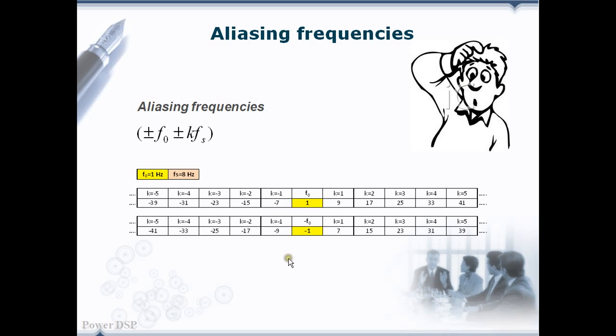However, there are so many frequency components which produce the same samples. What is the reason for this? This is all based on sampling frequency.